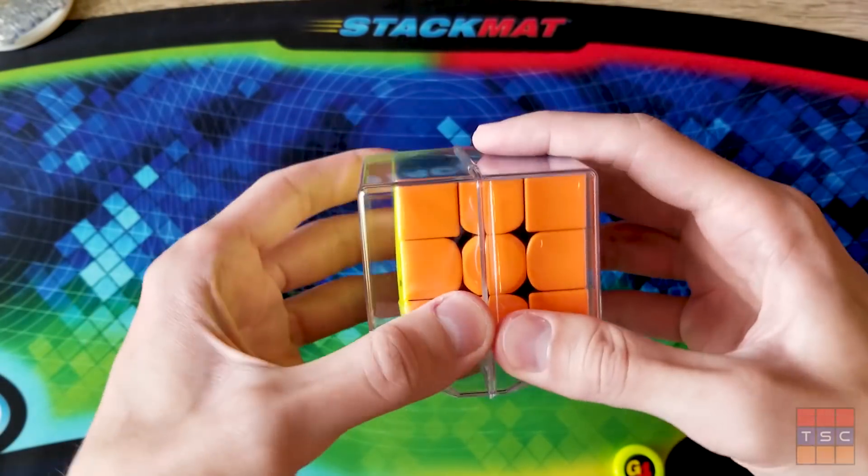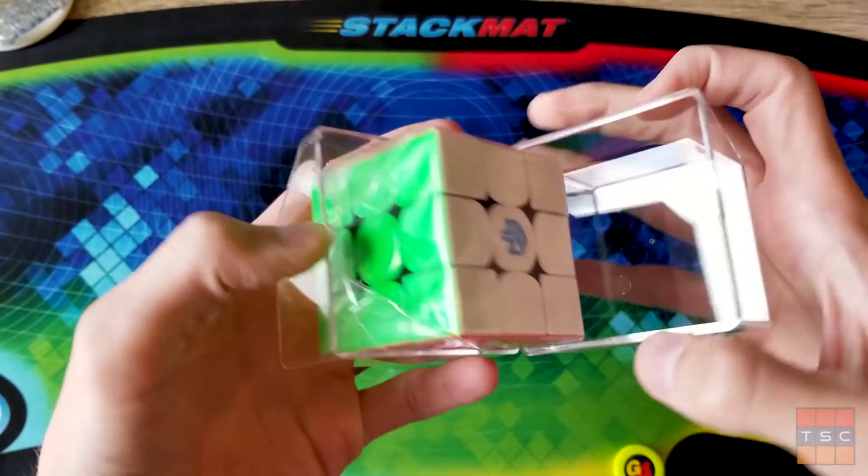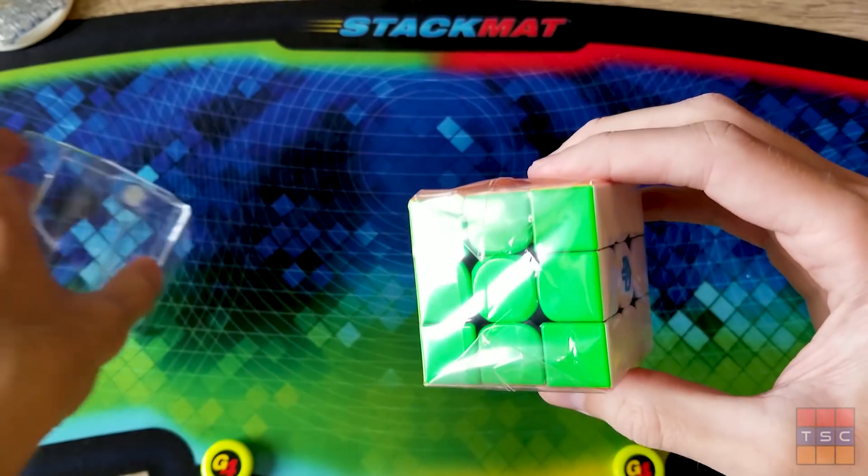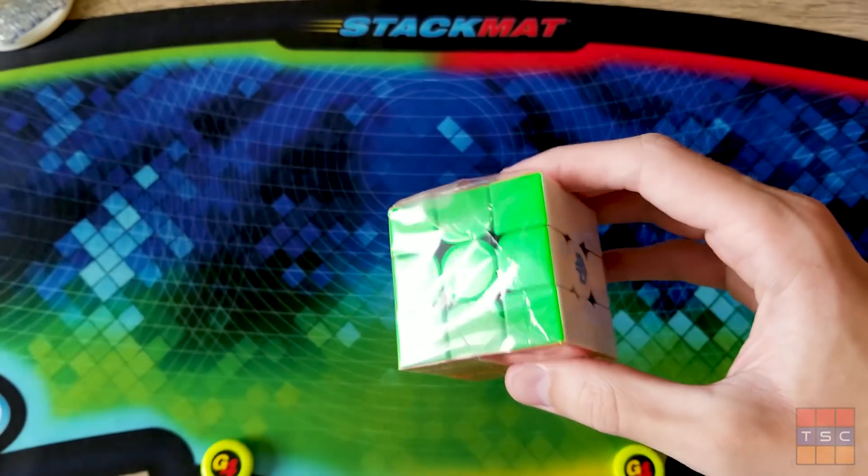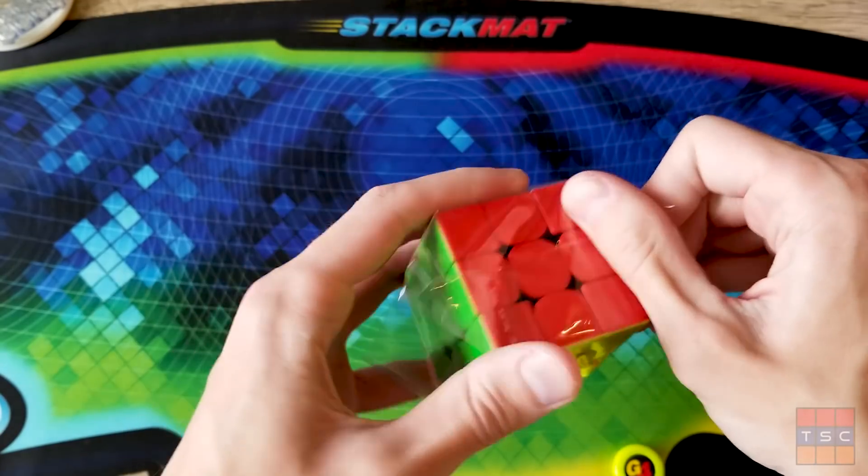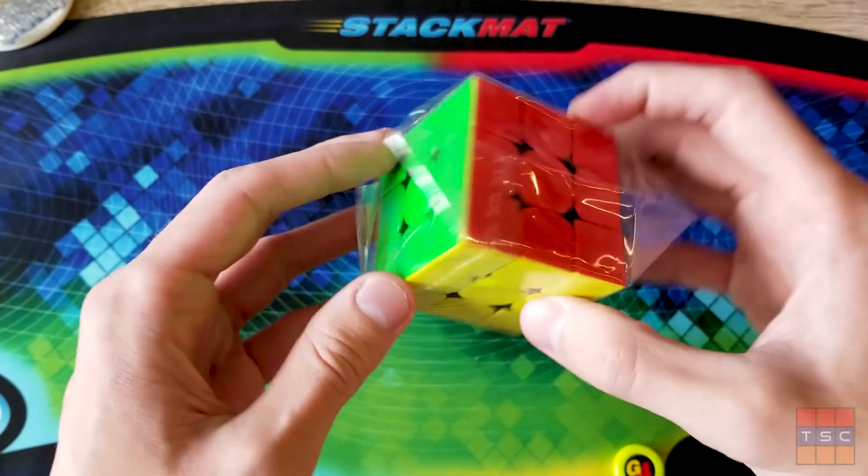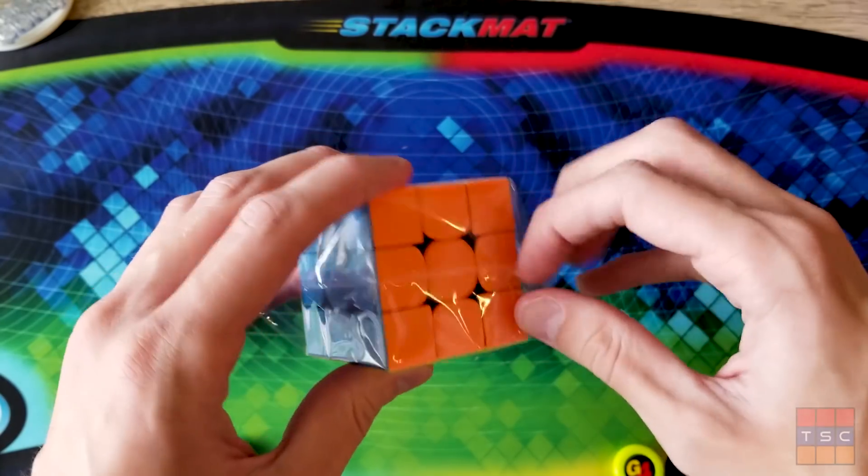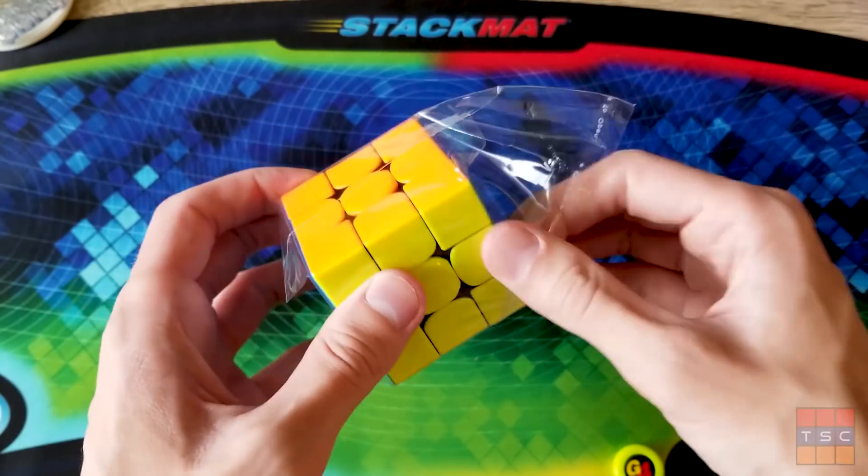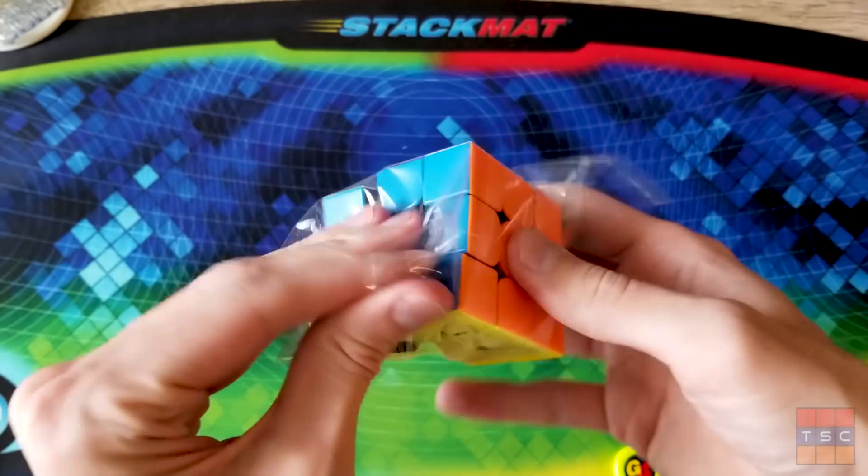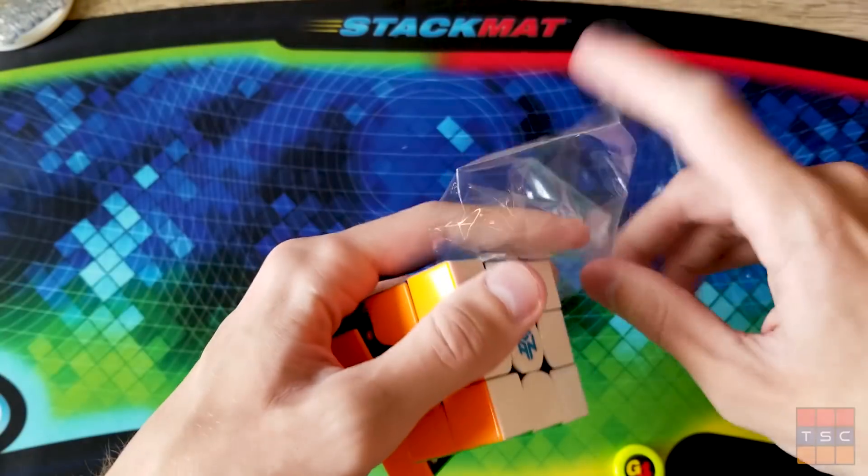Here's the little case that it comes in. Let's go ahead and open this up. It's also wrapped in plastic on the inside. Let's see if I can open this. I find it kind of funny that I can basically solve Rubik's cubes in my sleep, but it takes me forever to find the opening for the package.